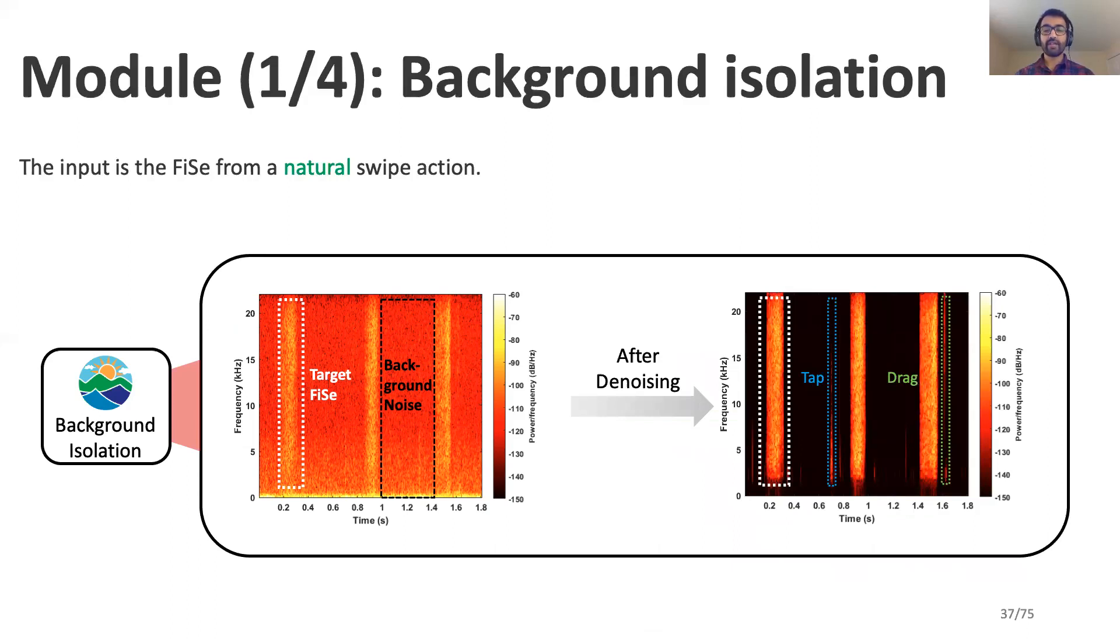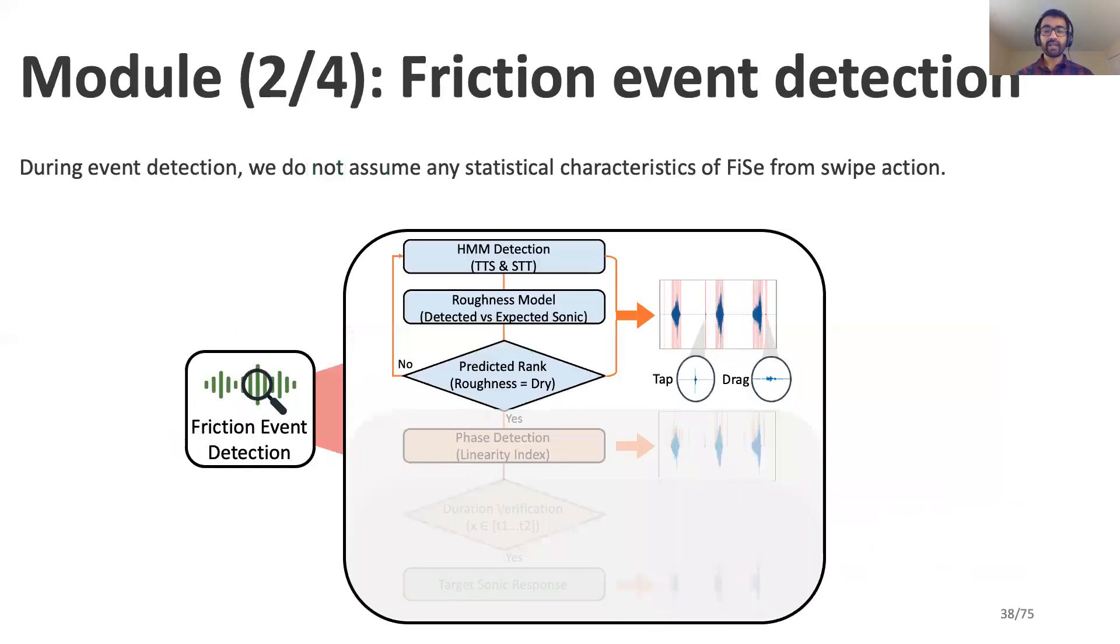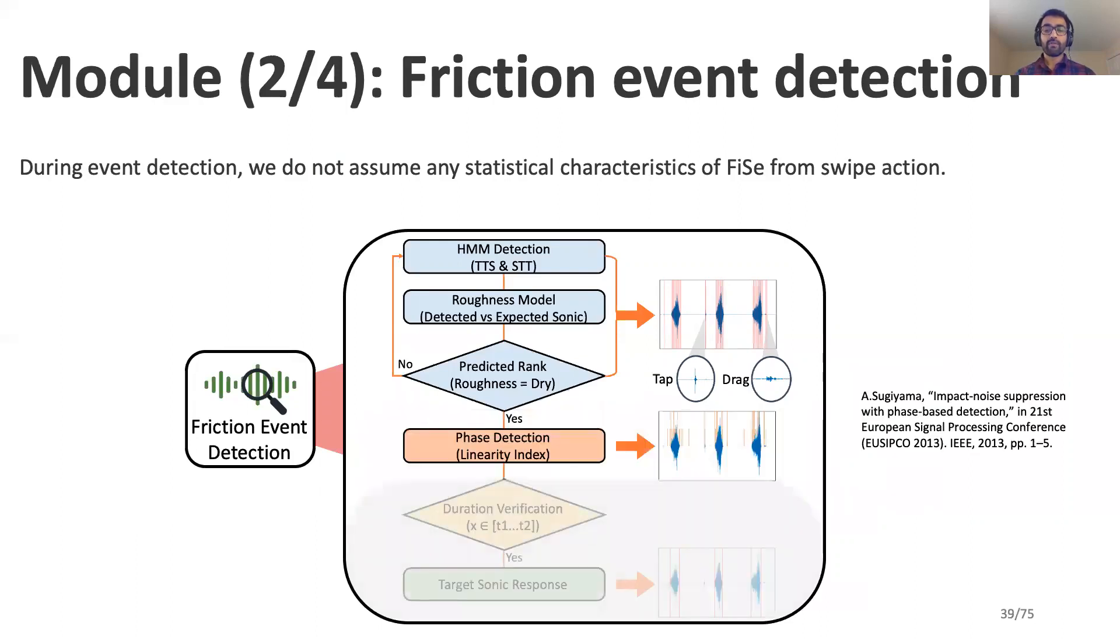After denoising, we observe very clean FICE signals. However, there are two noise elements such as tap from finger touching the smart device and drag which is finger slipping the surface that may still present. To identify the starting and ending position of the FICE, we employ a Hidden Markov model whose thresholds are optimized based on the roughness of the human finger depth. While the FICE is currently identified, we employ a phase-based detection module to detect the tap and drag noise. Lastly, we ensure that our duration of the target signal lies between a range of 0.1 to 0.3 seconds. If this condition is met, the signal is classified as a sonic response and fed to our feature detection module.